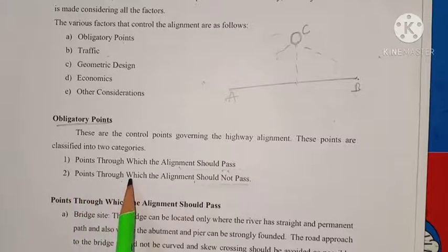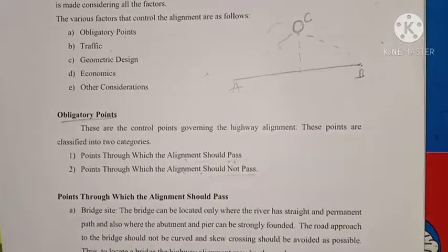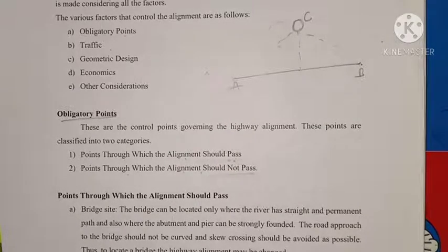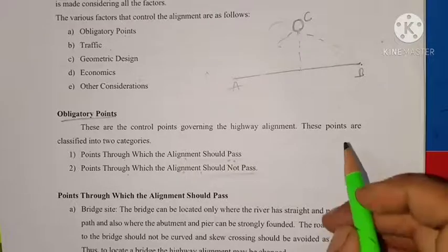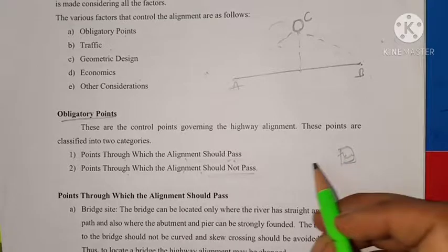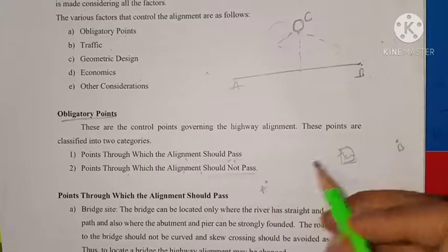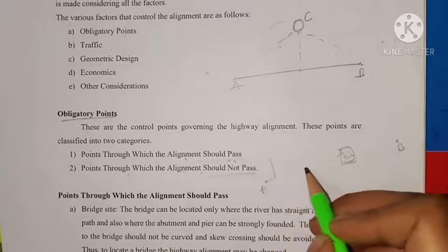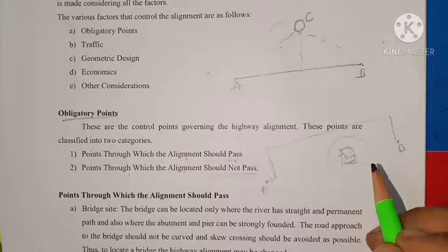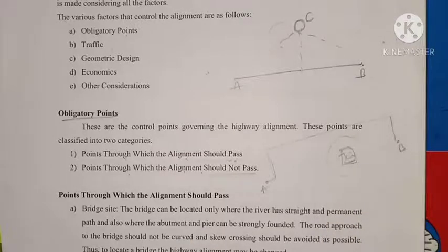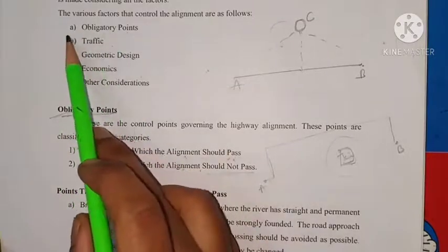Points through which the alignment should not pass include religious places, very costly structures, lakes, ponds, and museums. For example, if there is a temple in the path, the road will be diverted around it rather than passing through. These are the obligatory points through which alignment should not pass.